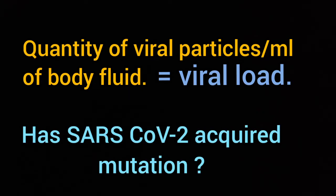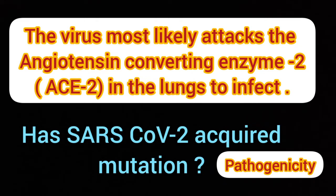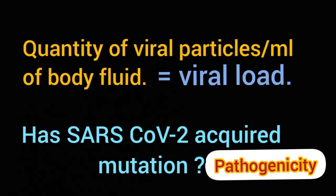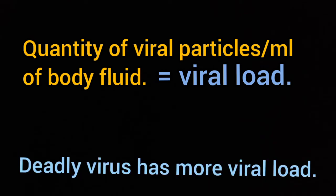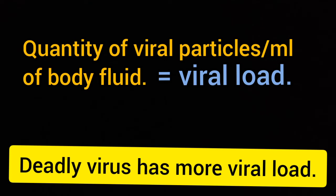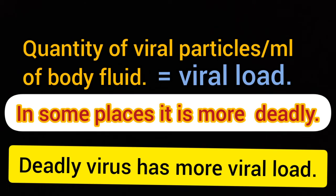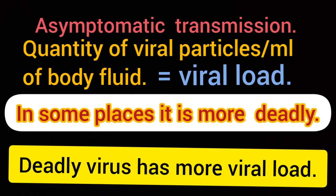If SARS-CoV-2 has mutated, it keeps the capability of changing its pathogenicity. One version of SARS-CoV-2 is a more efficient killer than the other version, so in some places of the world it is more deadly and in some places it has a mild effect.